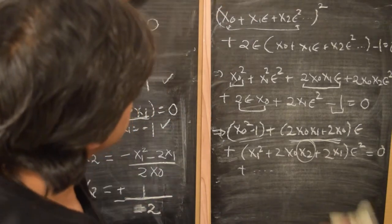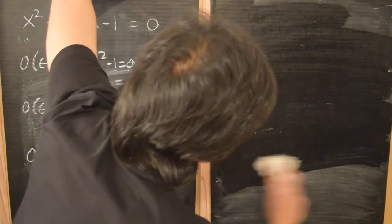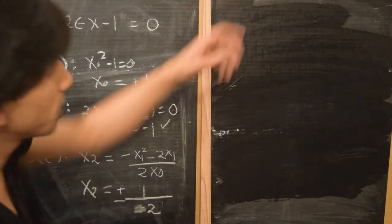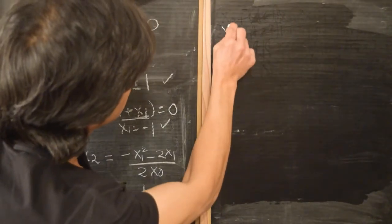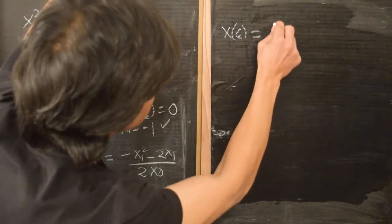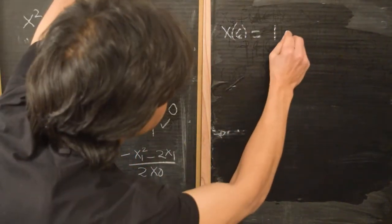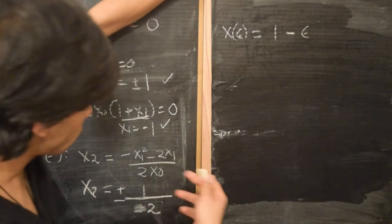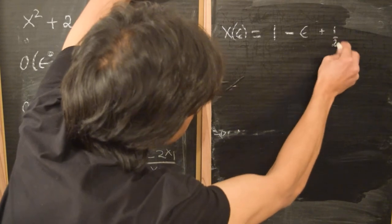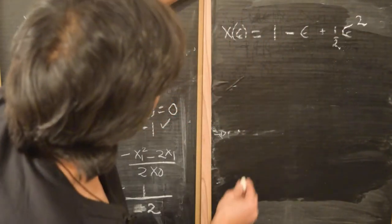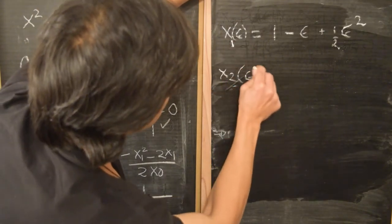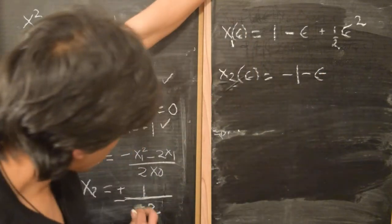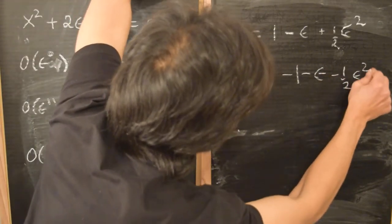So what does this entire process tell us? It tells us that we have two solutions, one with x₀ equals plus one. When x₀ is plus one, the overall solution x as a function of epsilon is plus one, then x₁ is minus one so we have minus epsilon, and then x₂ is half so we have plus half epsilon squared. That's our first solution. And the second solution is minus one, x₁ is minus one for both of them so it's minus epsilon, and then minus half epsilon squared.